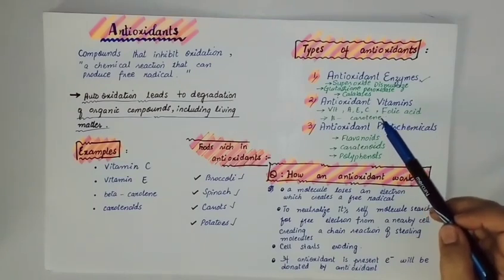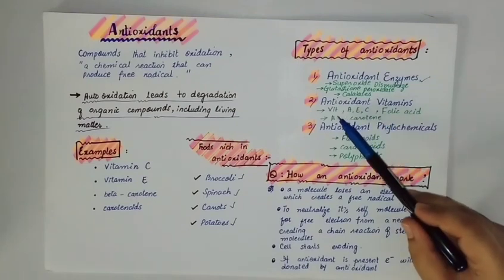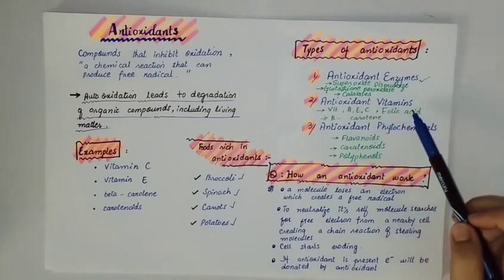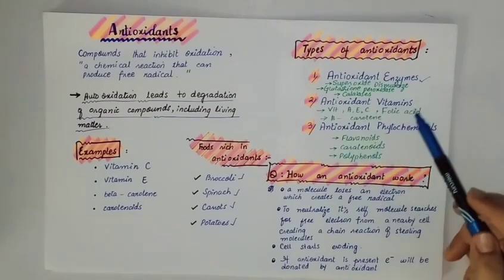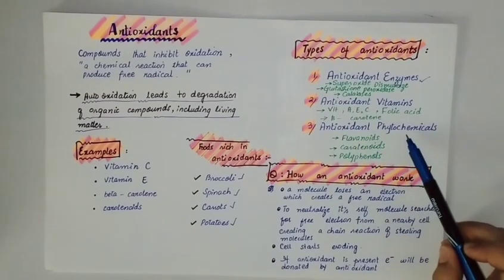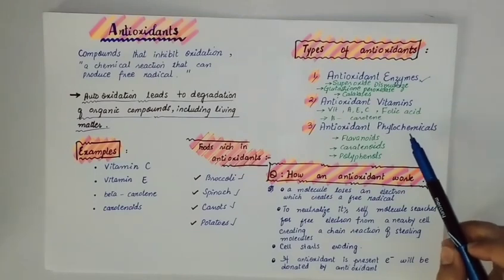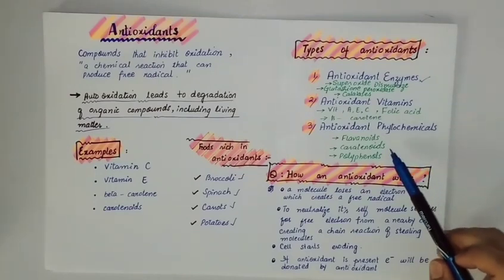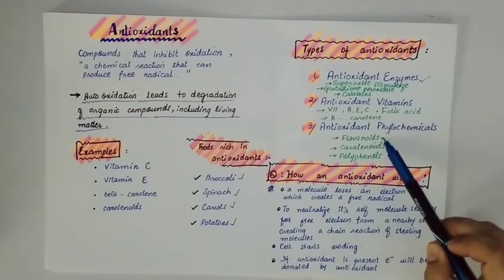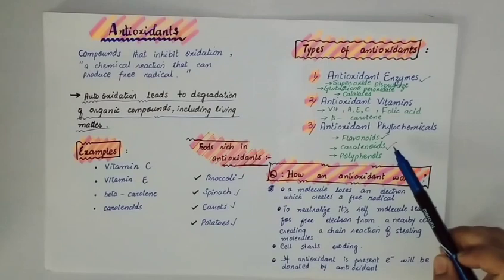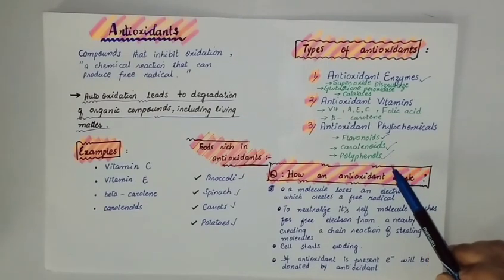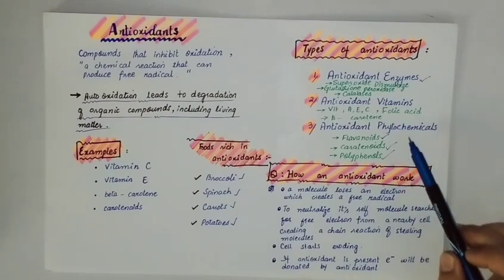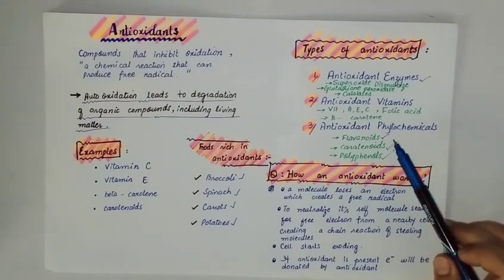But the body cannot naturally synthesize these vitamins, which include vitamin A, E, C, folic acid, and beta-carotene. Then come antioxidant phytochemicals. Phytochemicals are compounds that plants naturally produce to prevent their own oxidation. When we consume these plants, they work as antioxidants for us, including flavonoids, carotenoids, and polyphenols.